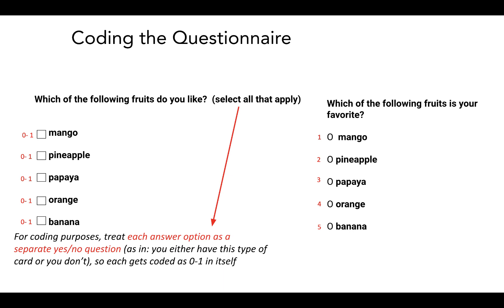If the researcher asks you to pick your favorite, it basically implies you can only pick one. So if I were to pick one out of all of these, I would probably say mango. So I would get code one because I would circle the answer option of mango. So that would correspond to code one. If I would have picked papaya or banana, I would have gotten code three, which corresponds with papaya, or code five, which corresponds with banana.